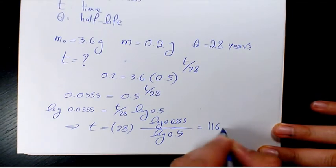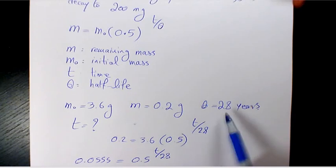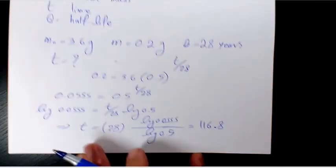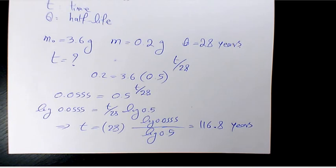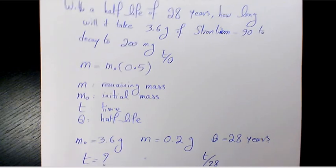What's the unit? The unit has to be the same as the unit for θ, which is years. So it's going to take 116.8 years to get from 3.6 grams all the way to 0.2 grams.